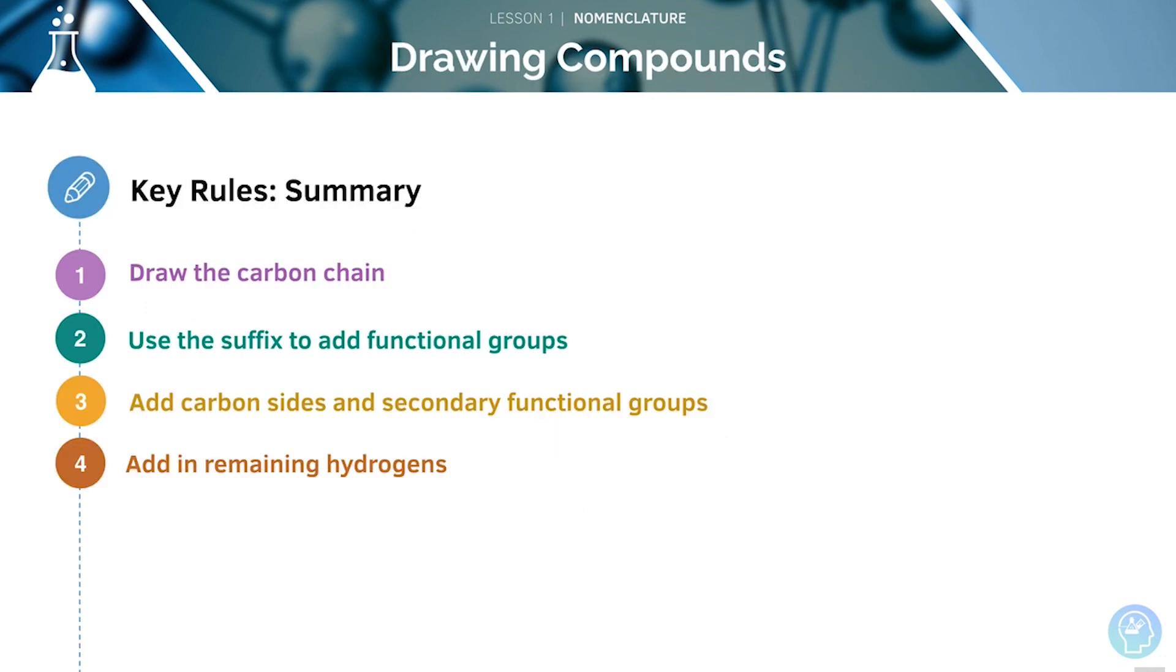This is a recap of the key rules for drawing out compounds. It's really important to get your carbon chain right in the first place, then add a suffix and the carbon side and functional groups. Once you've got all the parts to your structure, you can finally add in any remaining hydrogens.